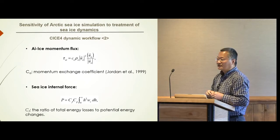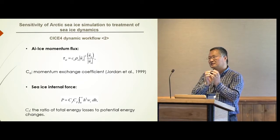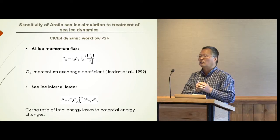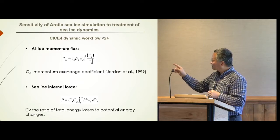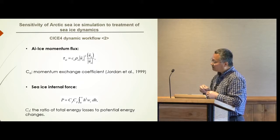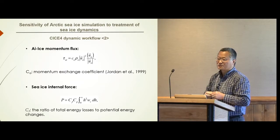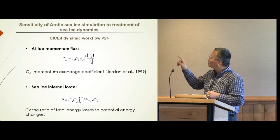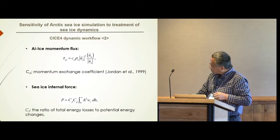If there is a loss in CIS total energy, that lost energy can be consumed by internal friction, or if ridging occurs, it increases potential energy — so total energy loss converts to an increase in potential energy. In the sensitivity experiments, we look at the impacts of these two parameters, CF and CA, on the simulated CIS distribution. Regarding the second parameter CF, there has not been much work done on it.